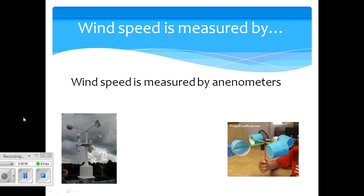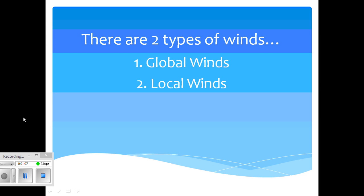Now wind speed is measured by an instrument called an anemometer. And there are two types of winds that I'm going to talk to you about. They are global winds and local winds.